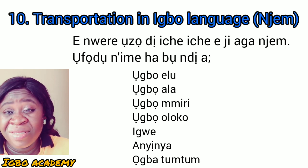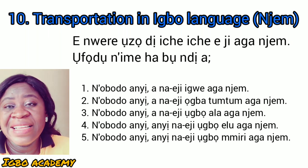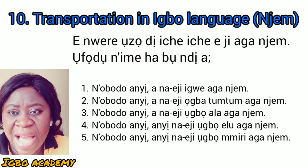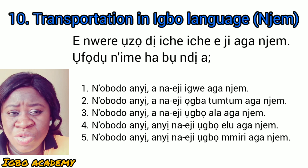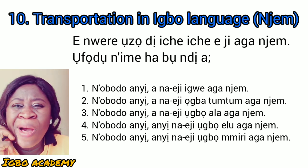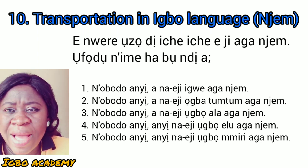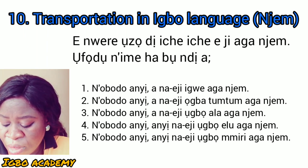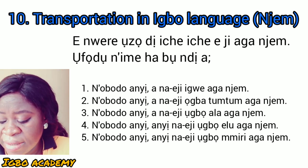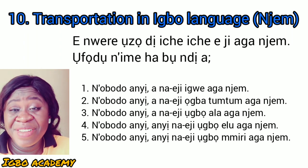So this is an example of putting them in a sentence. That means in my village, we use bicycle for journeys or to travel as a means of transportation. So we know all this as means of transportation. This topic is very simple.